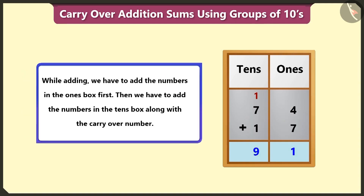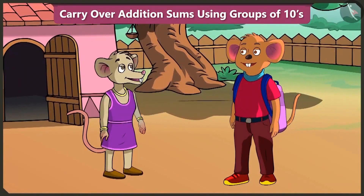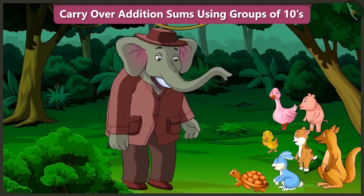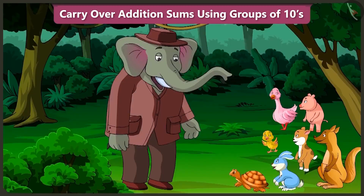While adding, we have to first add the numbers in the ones box, and then add the numbers in the tens box along with the carry-over number. I hope you were able to identify the abacus numbers and learn how to add 2-digit numbers using the carry-over method. In the next video, we will learn some interesting facts about adding 2-digit numbers with the carry-over method.